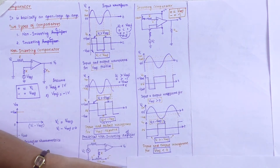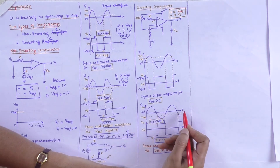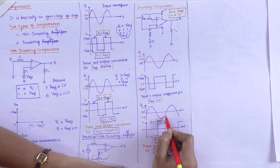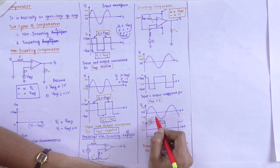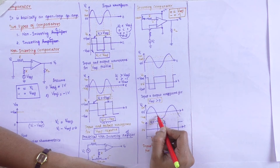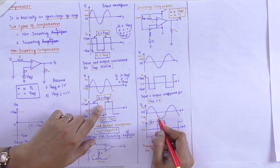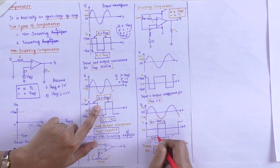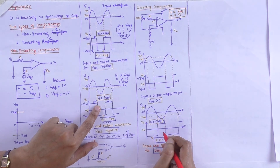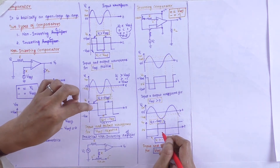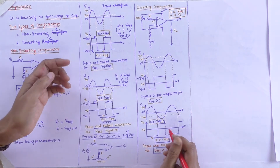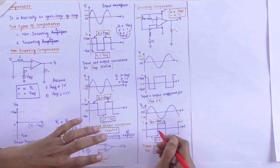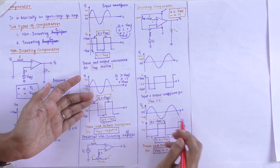Coming to the second circuit — we have minus V reference voltage shown as a dotted line. Based on this, it is taken with the negative half cycle. Here it starts with plus V saturation, and in the other condition it starts with negative V saturation. The V saturation value will be higher and minus V saturation value smaller. Here VI reference is less than V reference in one region and greater in another.